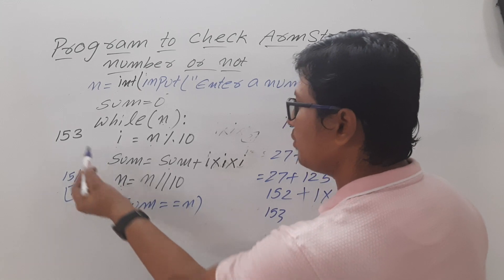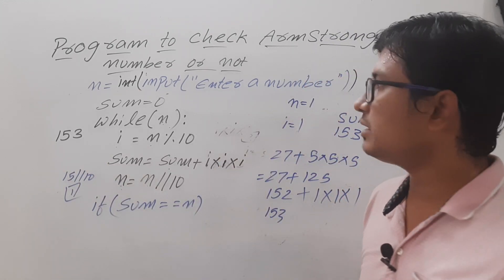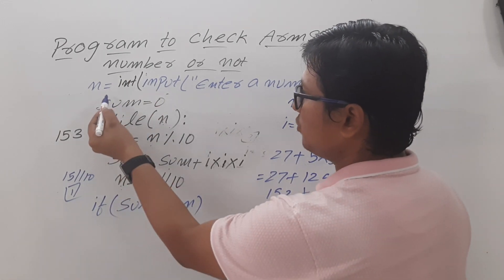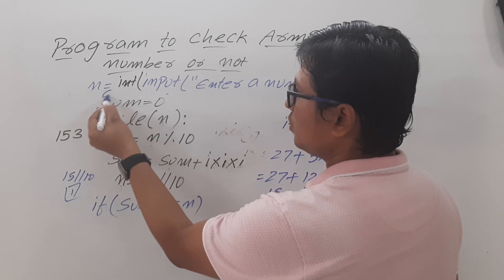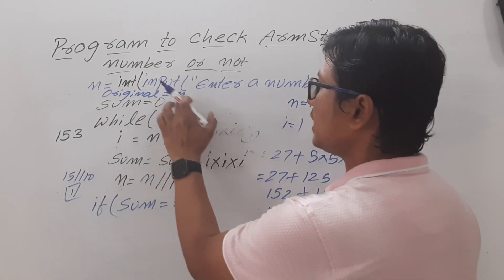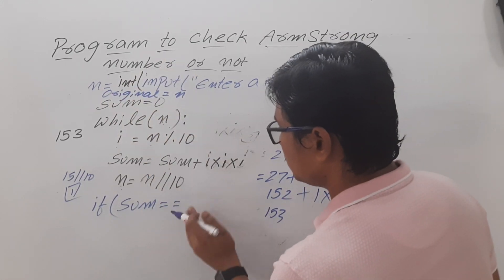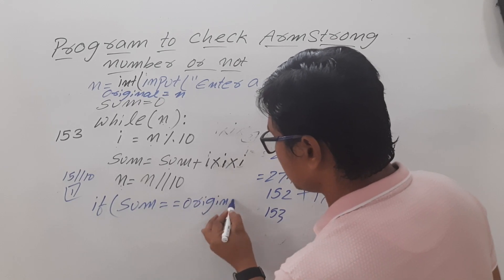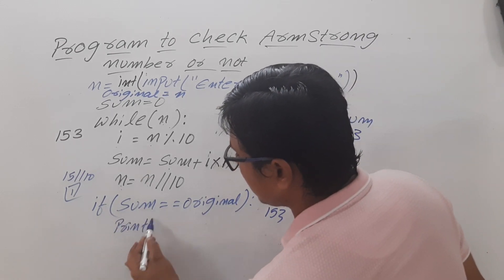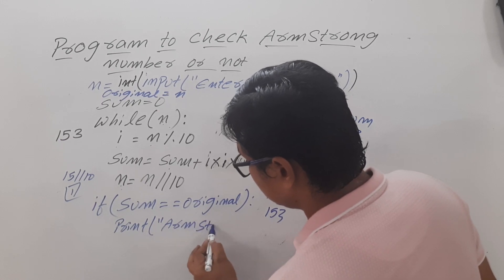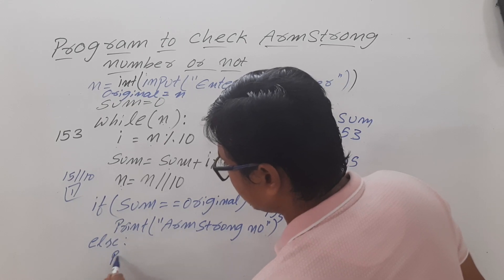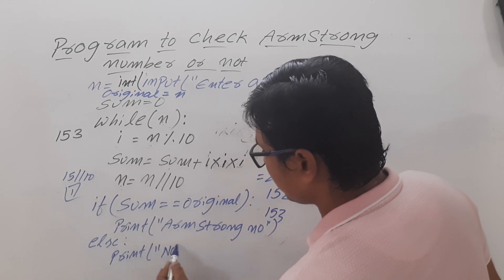Now sum is 153 but n has become 0. So we need to save the original number before the loop: original = n. Then after the loop, compare sum with original. If sum == original, print 'Armstrong number'; else print 'Not an Armstrong number'.